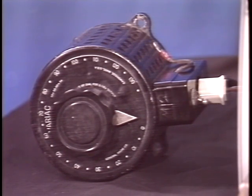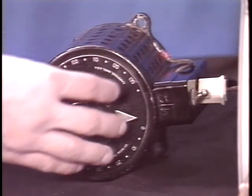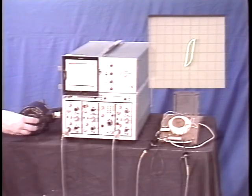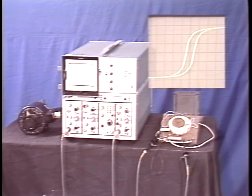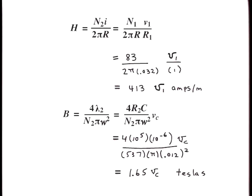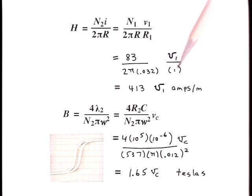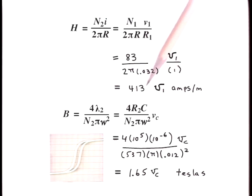We turn up the variac current. The scope shows the BH hysteresis loop typical of a magnetically soft material. For our primary coil of 83 turns, the major radius is about 3.2 centimeters. The current viewing resistor on the primary coil is 1 ohm. Thus, the scope scaling factor relating H to V1 equal IR1 is 413. With a horizontal scope scale of a half a volt per centimeter, each scope horizontal deflection of 1 centimeter is about 210 amps per meter.